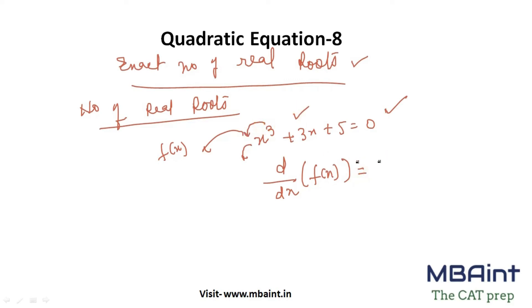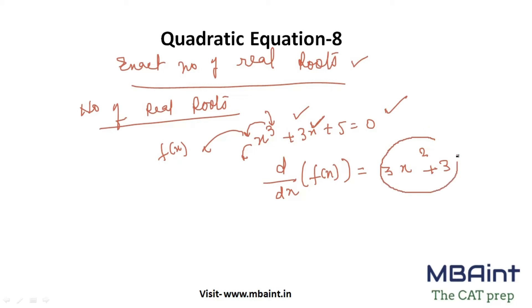When we differentiate, we get 3x² — we lose one power — and differentiating 3x gives us 3, so this is 3x² + 1. When I look at this equation clearly, if I put any value of x here, this equation is always going to turn out to be a positive value.